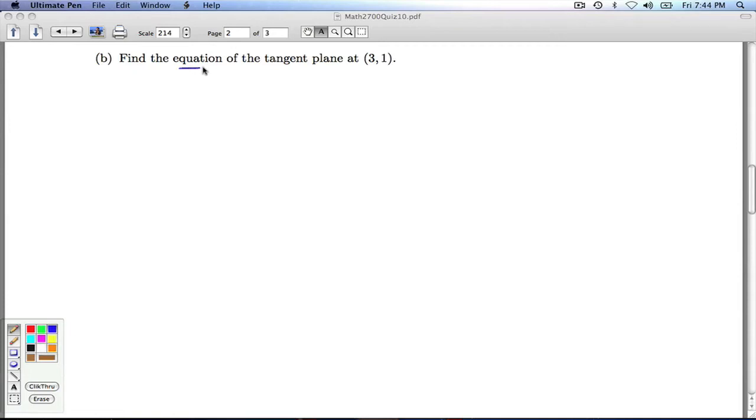Okay, part B, we're asked to find the equation of the tangent plane at the point 3, 1. So let's think back to what we need to write the equation of any plane. We need a point that's on the plane, and we need a normal vector.